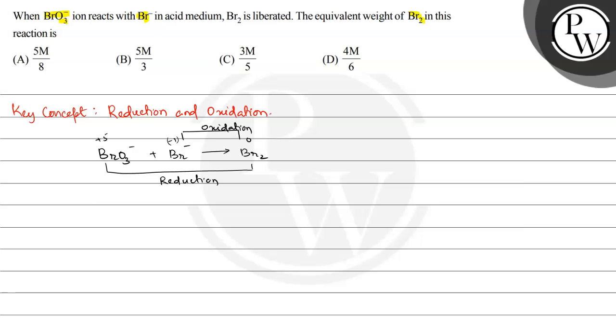We have to split this reaction into two halves. The oxidation reaction is Br- gives half Br2 plus 1 electron, or we can write it as 2 Br- giving Br2 plus 2 electrons. This is the oxidation reaction.